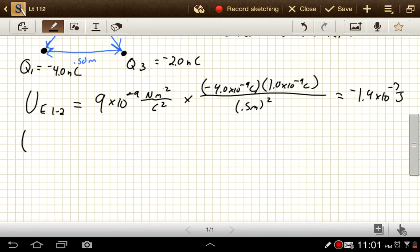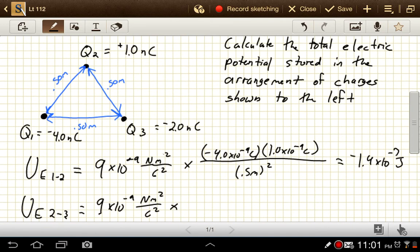For the electric potential energy from two to three, we still have that 9×10^-9 N·m²/C², times 1.0×10^-9 coulombs and -2.0×10^-9 coulombs, divided by 0.5 meters. And this one gives us -7.2×10^-8 joules.